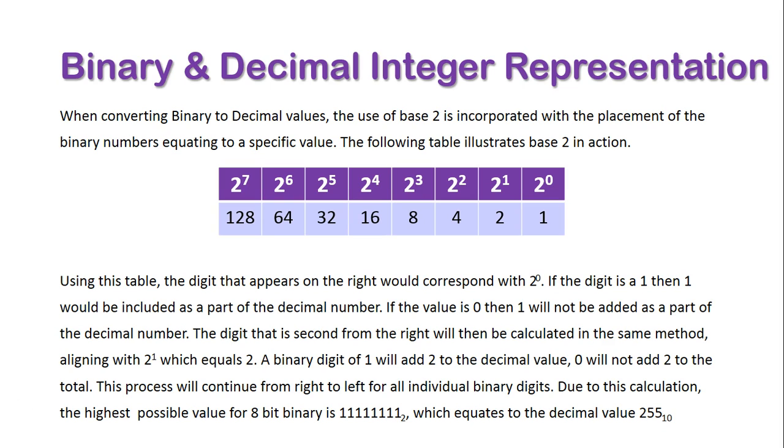Using this table, the digit that appears on the far right would correspond with 2 to the power of 0. If this digit is 1, then 1 would be included as a part of the decimal value. If the value is 0, then 1 would not be included as part of the decimal number. The digit that is second from the right will then be calculated in the same method, aligning with 2 to the power of 1, which equals 2. A binary digit of 1 will add 2 to the decimal value. 0 will not add 2 to the total.